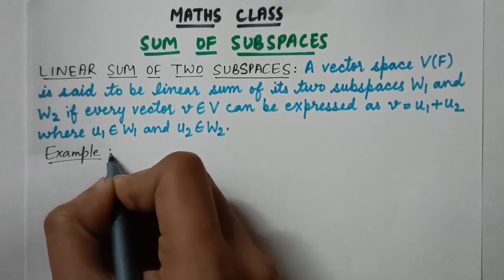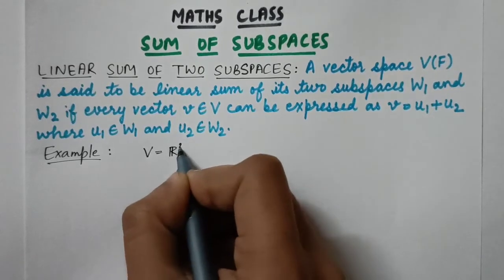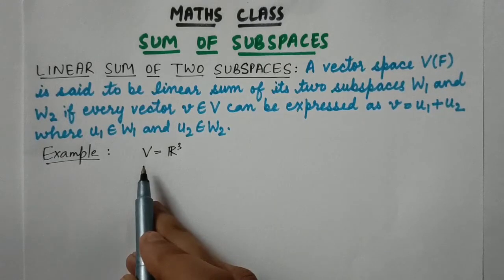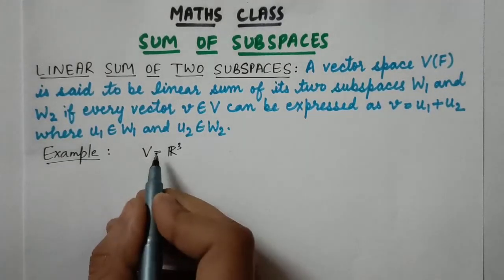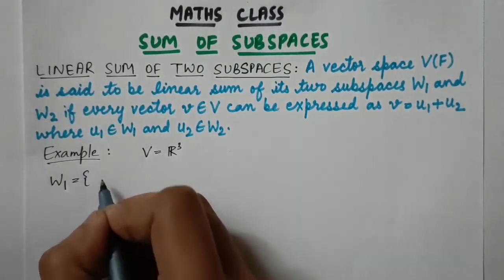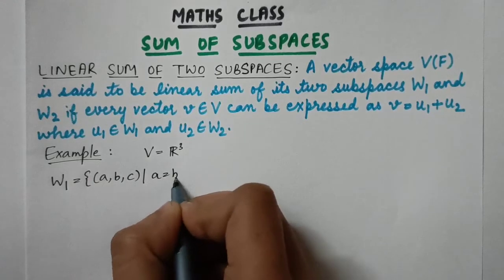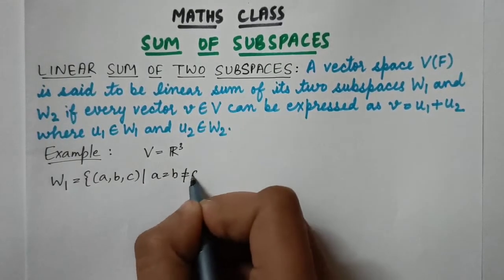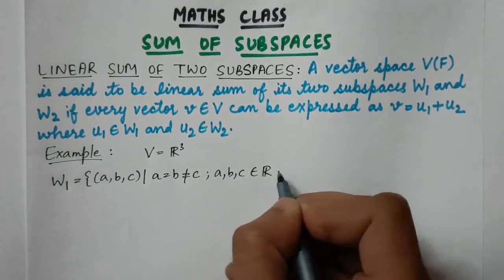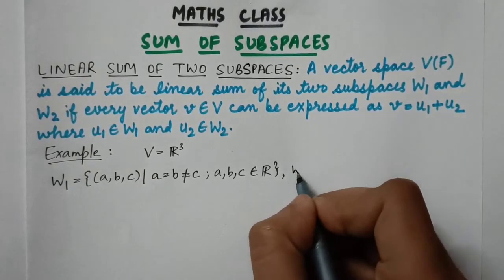Let's understand this definition using an example. Suppose we have a vector space V that is R3, so elements are in the form of triplets. Let W1 be a subspace of V containing elements (a, b, c) such that a = b but a and b are not equal to c, where a, b, c are real numbers.